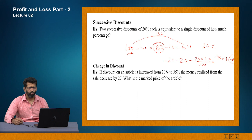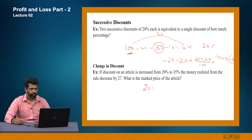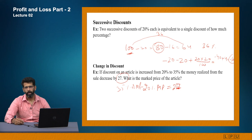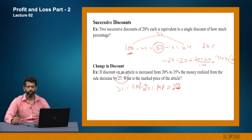Another question: if the discount on an article is increased from 20% to 35%, the money realized from the sale decreases by 27. What is the marked price of the article? Assume marked price = M. The difference between 35% and 20% of marked price is 27, so 15% of M = 27. Therefore M = 27/15 × 100 = 180. You can solve this kind of question by finding what percentage difference equals the given amount.